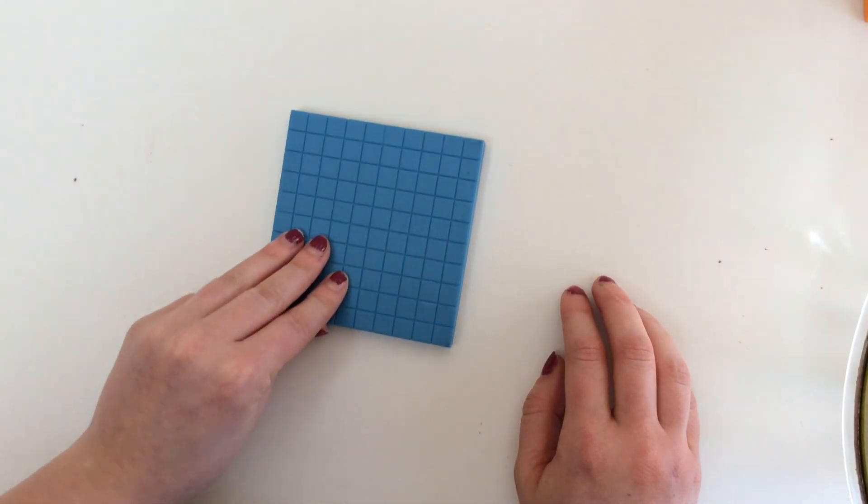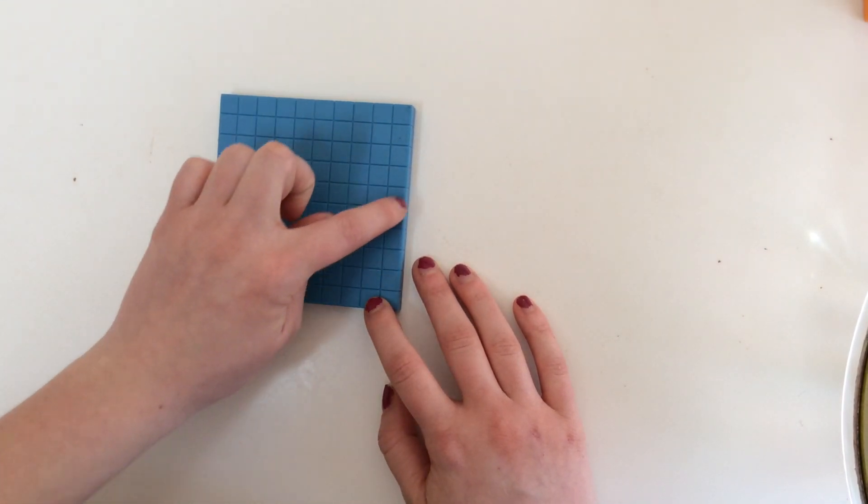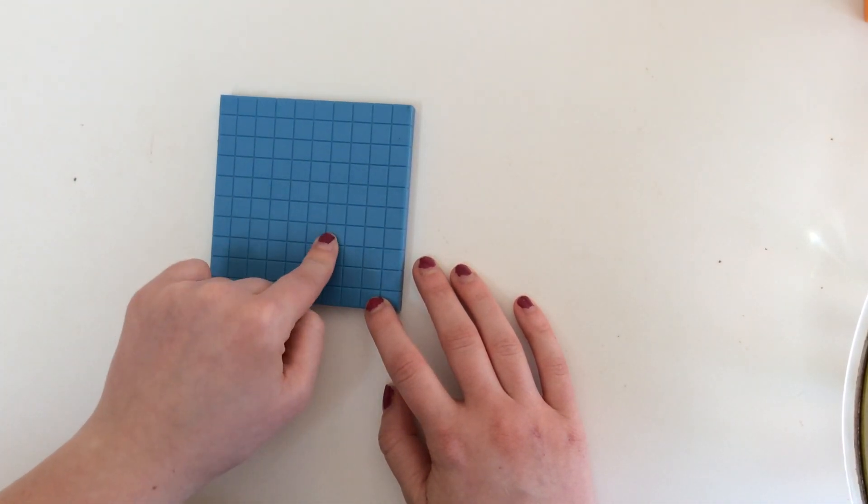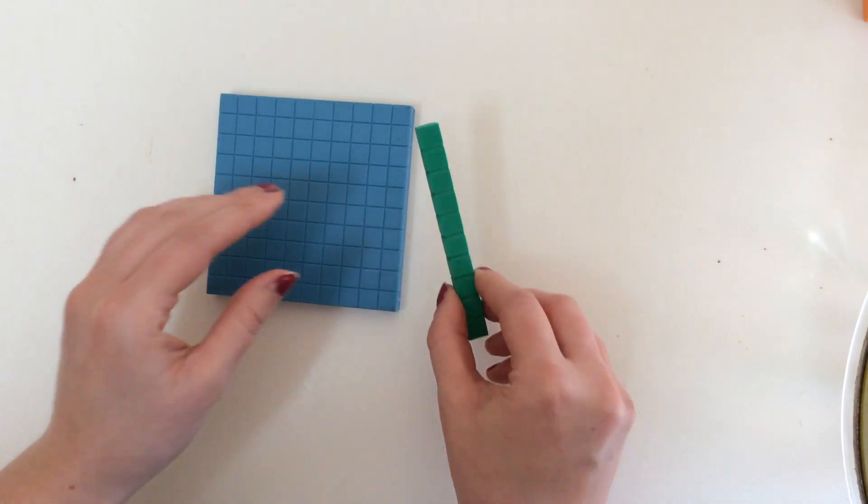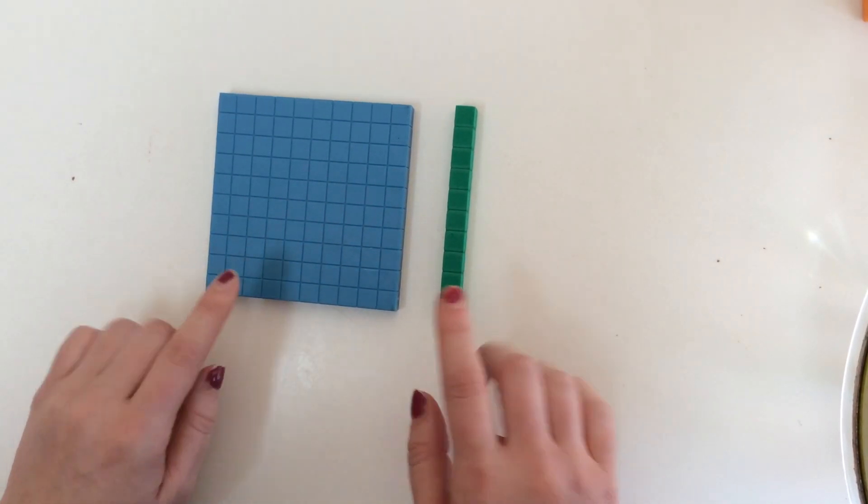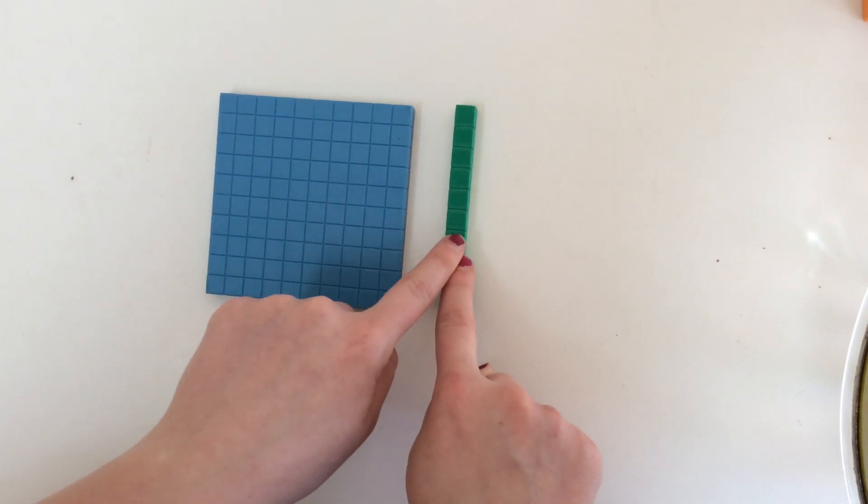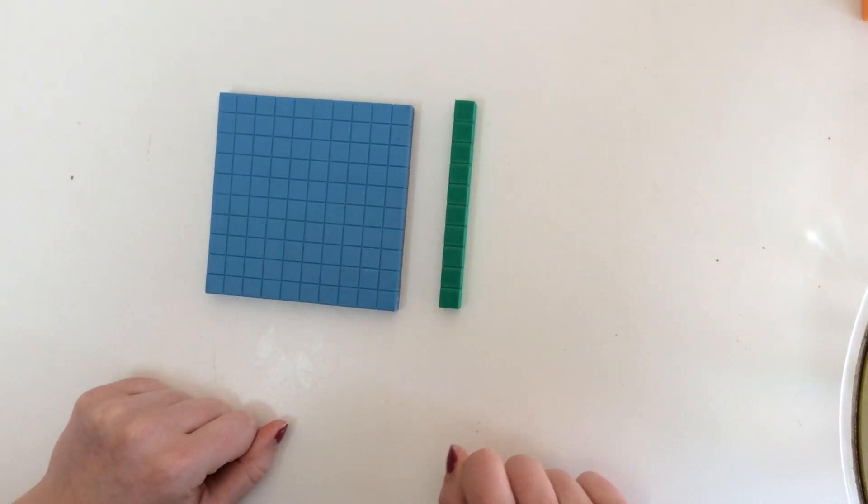Now let's make it a little trickier. What if I give you 100? This is a 100 block. If you have 100 and I add one 10 stick to it, how many would we have? 100 plus 10 gives us how many? Let's count. Ready?